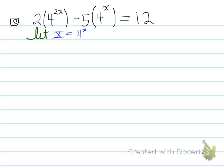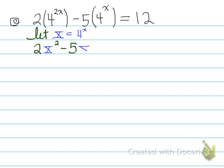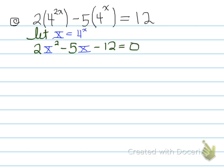We let u equal 4^x and replace all occurrences. The term 4^(2x) becomes u squared. Minus 5 times u equals 12, or moving 12 over: u² minus 5u minus 12 equals 0. What we have is something very familiar — a quadratic equation. The original question had a quadratic embedded in it that we couldn't see until we made the substitution.